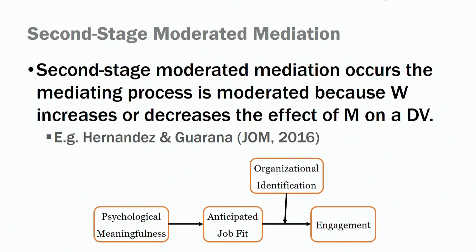In stage two models, we are looking at the effects on the second path — the interactive effects on the path between our mediator and our dependent variable. We are looking for the interaction term between our mediator and our moderator and its effects on the dependent variable.